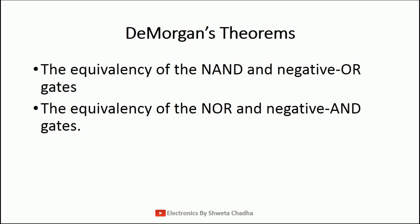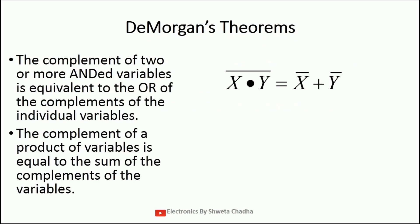The first is equivalency of NAND gate and negative OR gate. De Morgan's theorem states that the complement of two or more ANDed variables is equivalent to the OR of the individual complements of the variables. That means x dot y whole bar, which is the NAND gate, is equal to the complement of individual variables passed through the OR gate. The complement of the product of variables is equal to the sum of complements of the variables. So this NAND gate is equivalent to the negative OR gate. This is the first law of De Morgan's theorem.